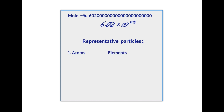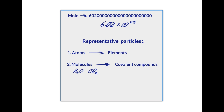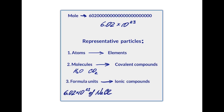Atoms are representative particles of elements. Molecules are representative particles of covalent compounds — only covalent compounds are called molecules. H₂O is a molecule; carbon dioxide is a molecule. Representative particles of ionic compounds are called formula units. So 6.02 × 10²³ formula units of NaCl make up one mole of sodium chloride.